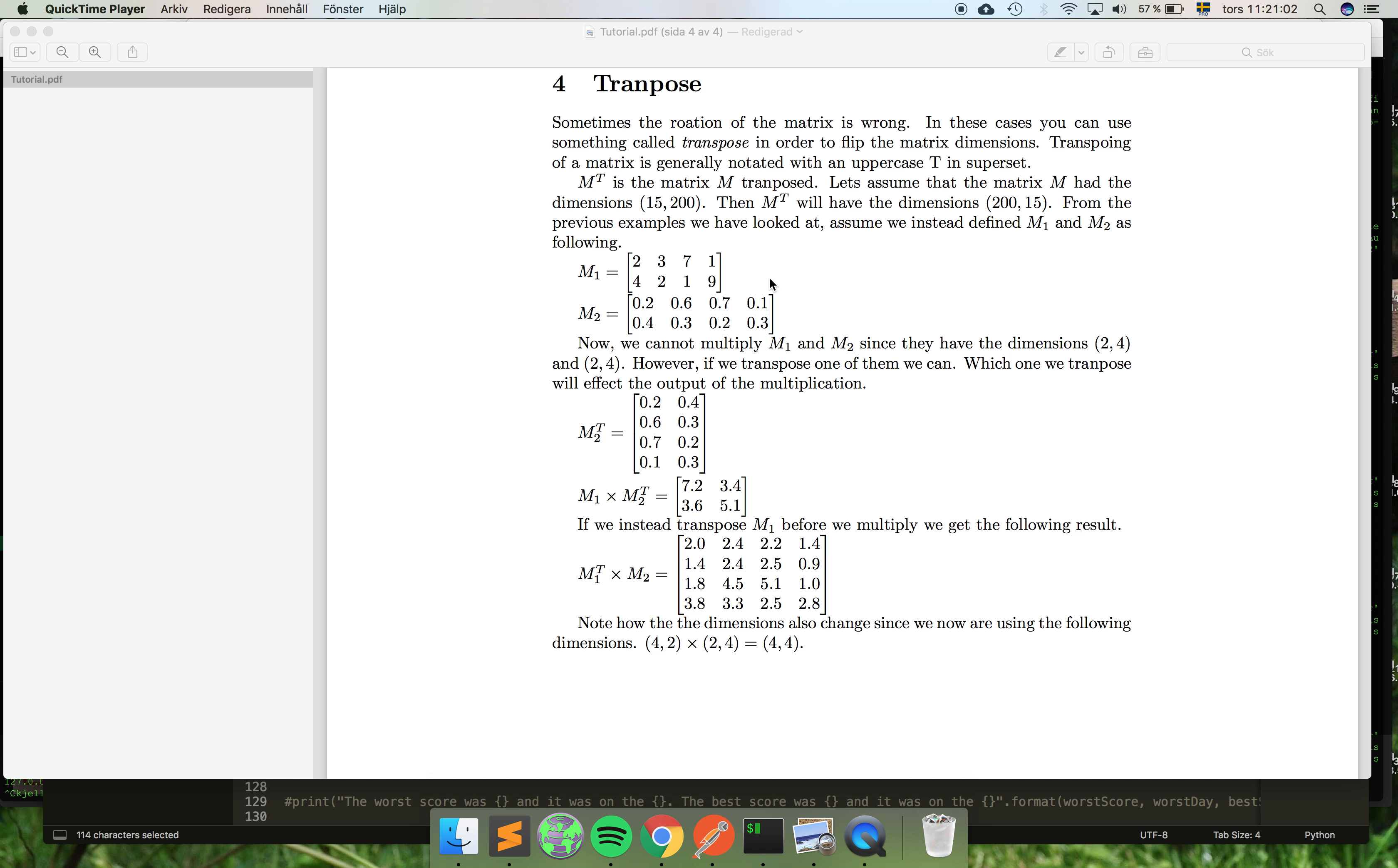It's basically when you have the matrices flipped in the wrong order when you want to multiply them. And if you have some matrix M and you want to notate it as transposed, you would use this superscript T here to show that this is M transposed.